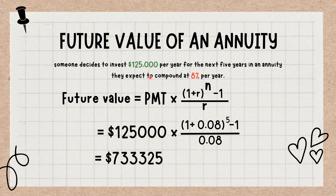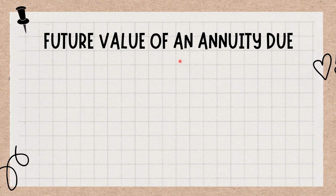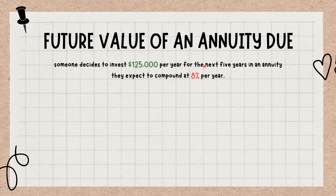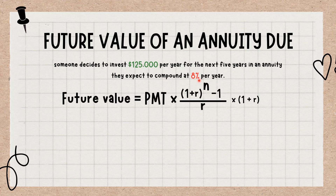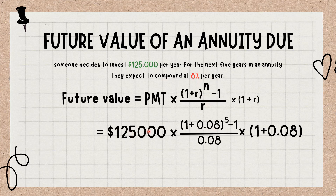Future value of an annuity due: Assume the same example as above was an annuity due, meaning each of the $125,000 payments was made at the beginning of each period. Its future value would be calculated as follows: = $125,000 × ((1 + 0.08)^5 − 1) / 0.08 × (1 + 0.08) = $791,991.